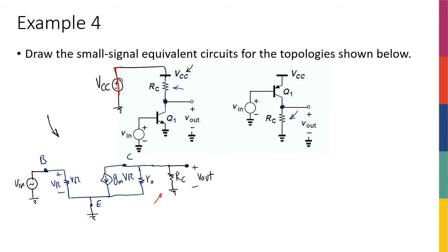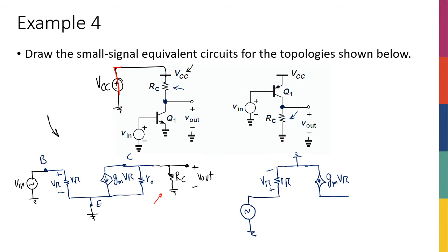Now let's do it for the PNP. For the PNP, emitter is on the top. I have R_pi again between base and emitter, and I have this current source going from collector to emitter: Gm·V_pi, where V_pi is the voltage between base and emitter across R_pi. Emitter is connected to ground, base is connected to my input signal. I also have early effect, so I have R_naught between collector and emitter. The voltage at the collector is called V_out, and I have RC from collector to ground.